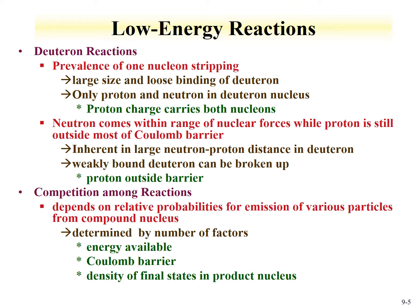The proton remains outside the barrier, so it's a way of having neutron reactions in an accelerator. There are a number of competing reactions, and their probabilities depend upon the probabilities for emission of the various particles from the compound nucleus. These probabilities are based upon energy available, the Coulomb barrier, and the final states of the product nucleus.